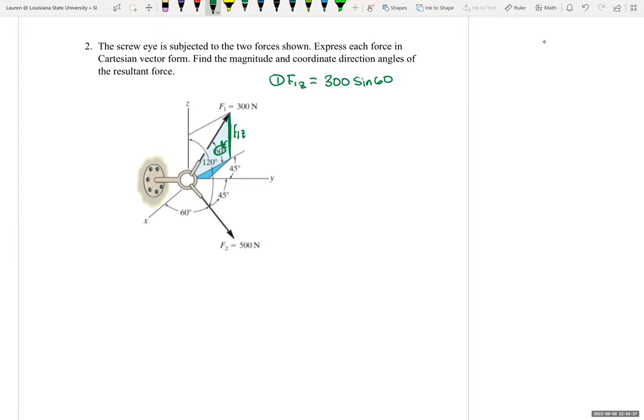Now let's find F1 prime, which is this line right here. So F1 prime, it's always going to be positive the force. So it will be positive 300, and it will be cosine 60 because it's next to this 60 degree angle right there.